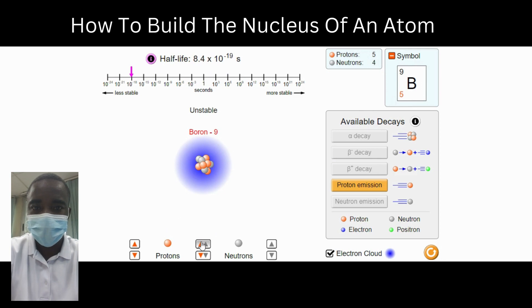The number of neutrons in the nucleus can vary, however. This is what gives rise to isotopes. Isotopes are atoms of the same element that have a different number of neutrons in their nucleus.